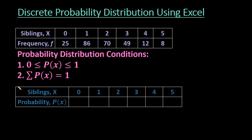For this video, what I want to do is show you how to create a discrete probability distribution using Excel. In order to create a discrete probability distribution, you have to have some values for x and frequencies. For this one, my values are the siblings, which represent my random variable x, and they are 0, 1, 2, 3, 4, 5. Then we polled some people to see what the frequency was.